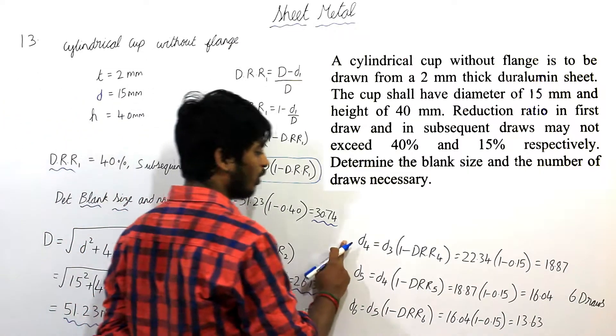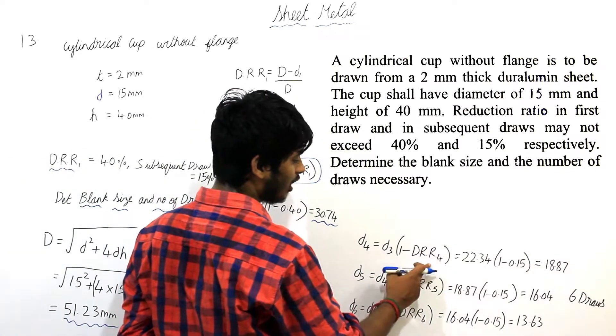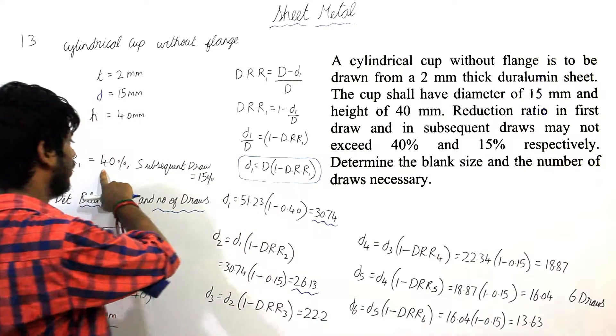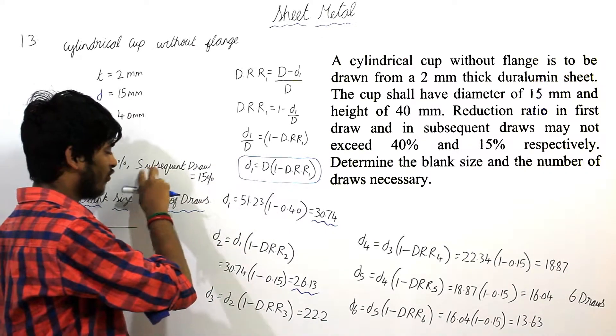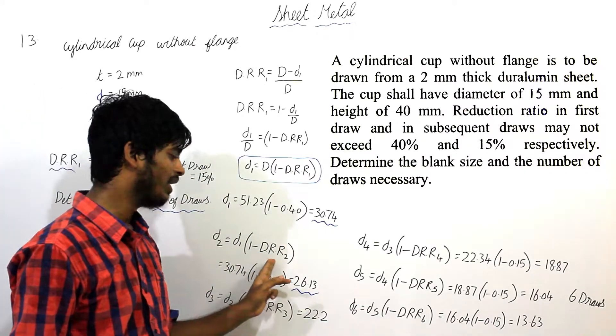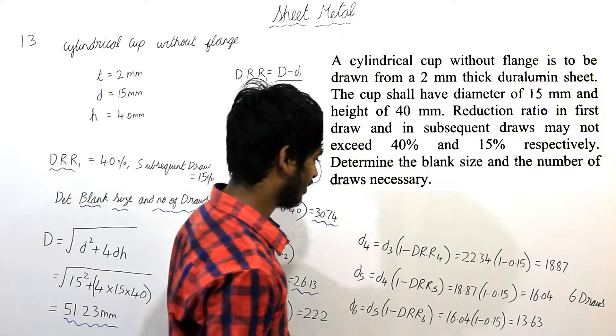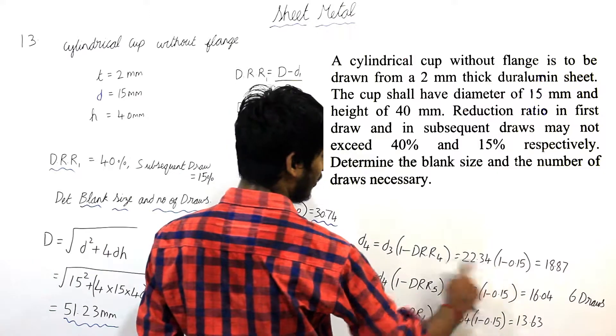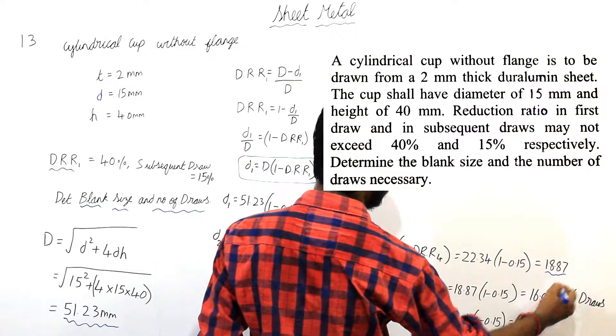Same way for d3 and d4 is equal to d3 into 1 minus DRR4. Only for the first draw, it is 0.40. For subsequent draw, that is from DRR2, it is 15%. So, 22.34 into 1 minus 0.15. I am getting 18.75.